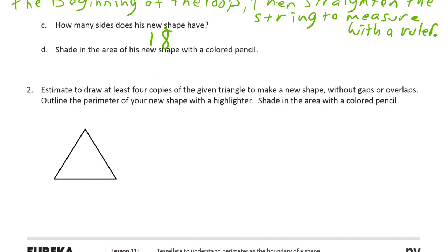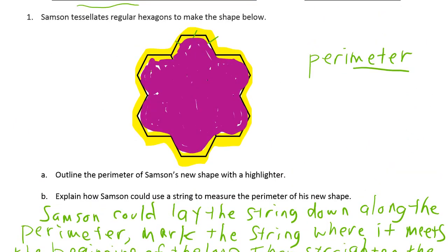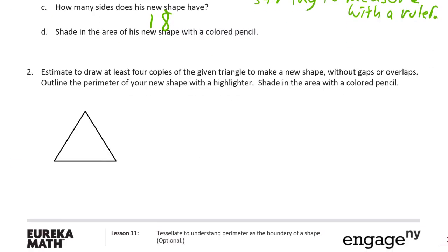Now estimate to draw at least four copies of the given triangle to make a new shape without gaps or overlaps. Outline the perimeter of your new shape with a highlighter and shade in the area with a colored pencil. So we need four copies of this triangle. He used hexagons to make a new shape and we're going to use triangles. So let's see, we're just going to kind of guess, here's one, we're trying to make the same triangle again and again. That's our estimation, it's not going to be perfect.